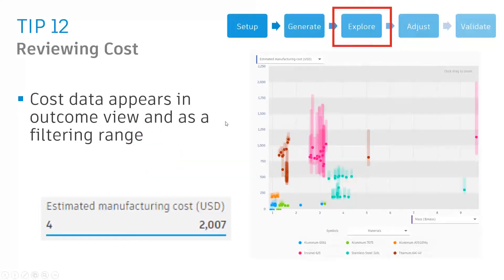So tip number 12. We talked about setting up for costing — how about reviewing the cost information? When you set up a generative solve and run all those hundreds of iterations in the cloud, now is the time where we actually go and start to explore those results. Within the explore environment, there are a number of tools to let you look at the cost for each one of those outcomes, filter down, and select the right one.